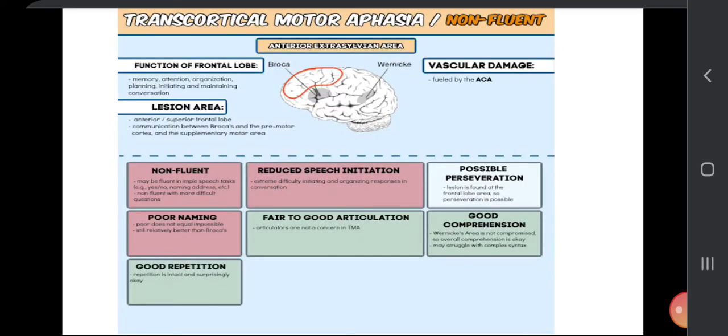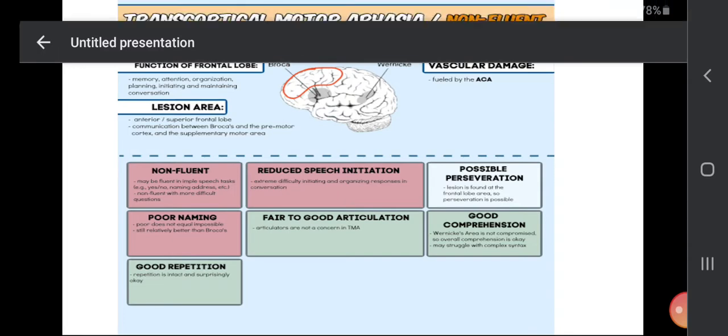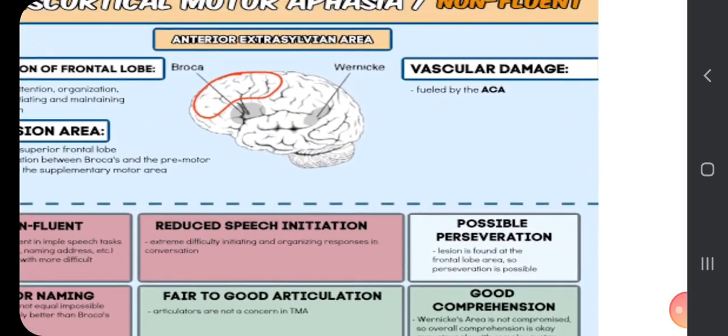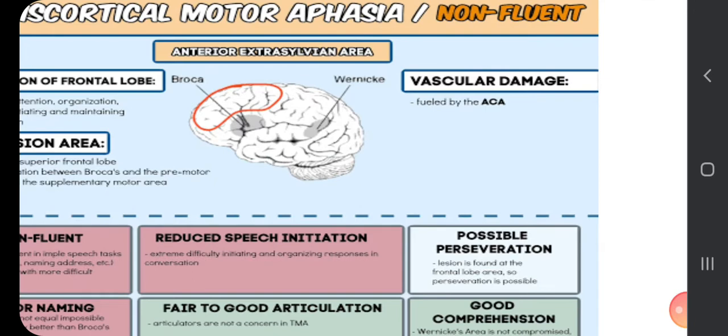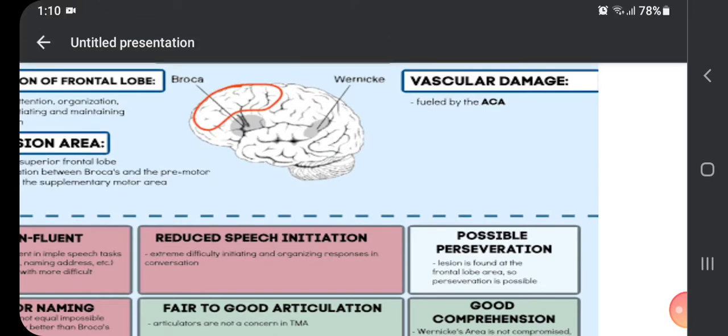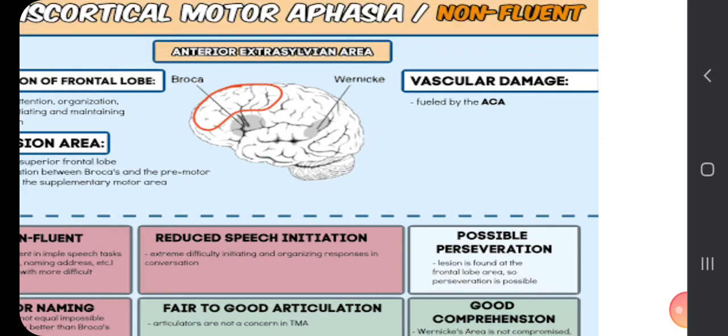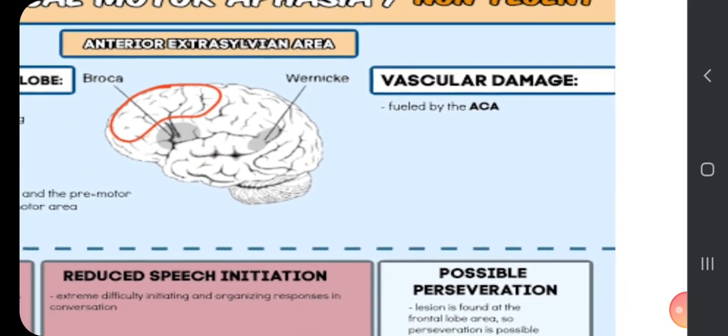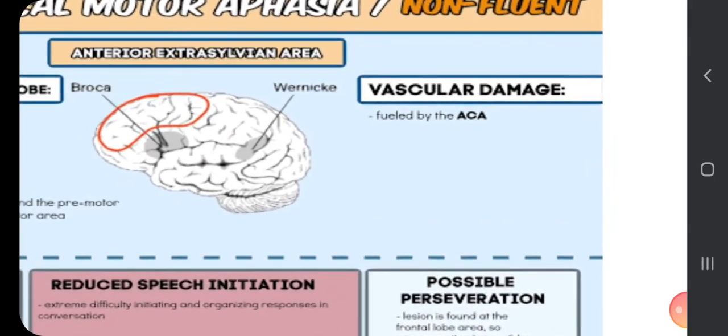Well, transcortical motor aphasia is yet another type of aphasia that falls into the category of non-fluent types. However, the lesion in this type of aphasia is an anterior extrasylvian area, and the vascular damage is fueled by the anterior cerebral artery.